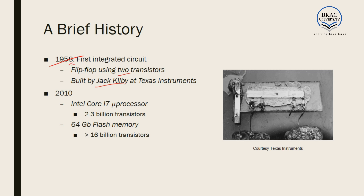That was the beginning of the transistor. From this picture we can see that at that time transistors were really big, but at present in a small processor — for example in the Kodi 7 processor — there are 2.3 billion transistors. In the 64 GB flash memory, that is the pen drive we use, they contain more than 16 billion transistors. So at present the size of transistors has decreased at a very large scale compared to the past.